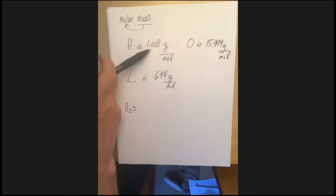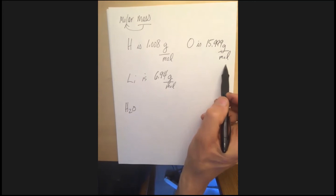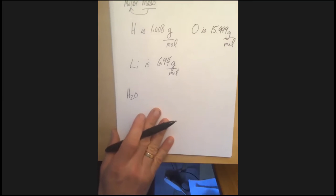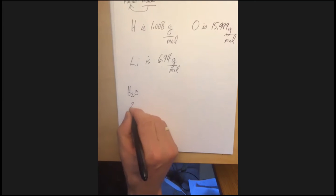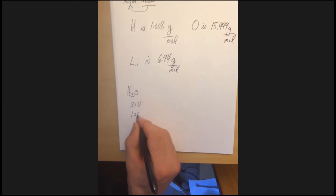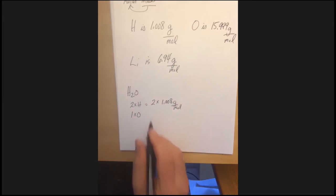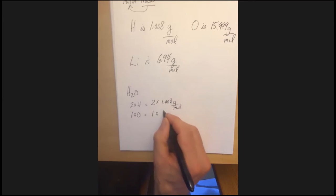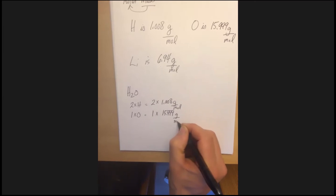So hydrogen 1.008, lithium 6.94, and oxygen 15.99 grams per mole, straight off the periodic table. So if we're looking for a molar mass of a compound, like water, we know that it's got two hydrogens. So it's two times the hydrogen, and it's got one oxygen, so it's one times the oxygen. So two times 1.008 grams per mole for the hydrogen, and one times 15.999 grams per mole for the oxygen.